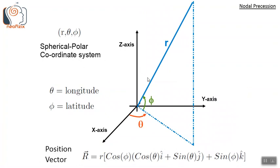In order to tackle this problem of precession of nodes, we need to consider the 3D spherical polar coordinate system. Small r is the distance between the two bodies, such as the distance between earth and moon or earth and sun. The larger mass is assumed to be stationary at the center of mass or the center of revolution. Theta (θ) is the longitudinal angle and phi (φ) is the latitude angle. The position vector of the smaller mass with respect to the larger mass is: vector R = r [cos φ cos θ î + sin θ ĵ] + sin φ k̂.